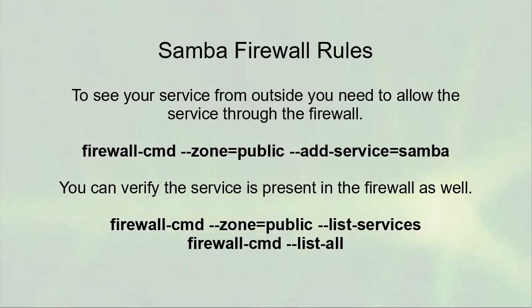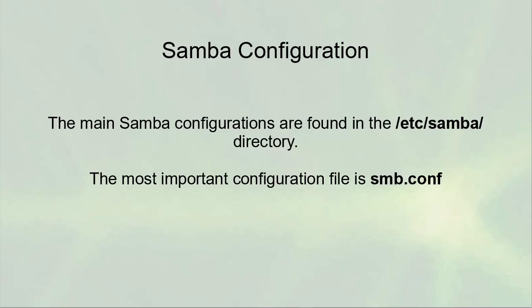When you want to configure Samba, the main configuration files are found in the /etc/samba directory. The most important of those configuration files is smb.conf. You might be able to find a file like smb.conf.example and you may want to copy that over the smb.conf file before you start editing, so all the configuration settings will be available and easy to see.